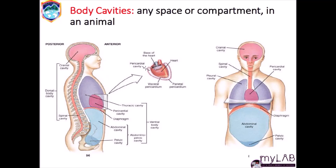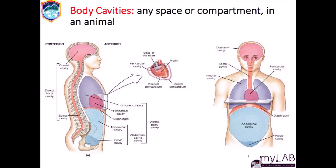Within the pericardial cavity, we have the heart, the visceral pericardium, and the parietal pericardium, which is the outer layer of the pericardial cavity that houses the heart. This other picture here is a frontal view showing the cranial cavity, spinal cord, pleural cavity, thoracic cavity, diaphragm, abdominal cavity, and the pelvic cavity.